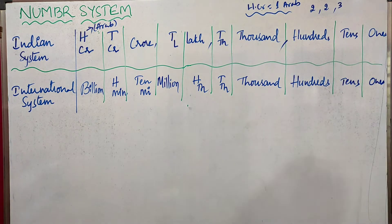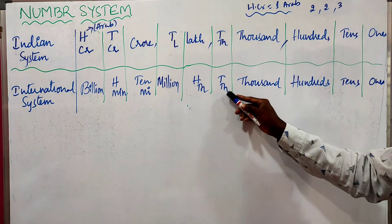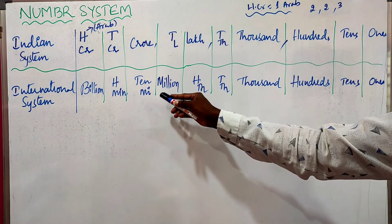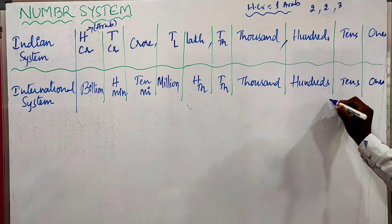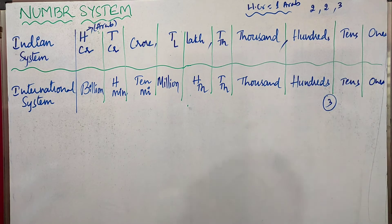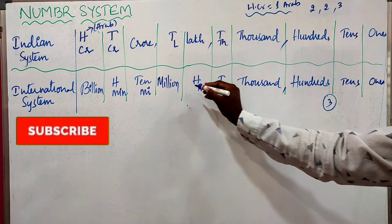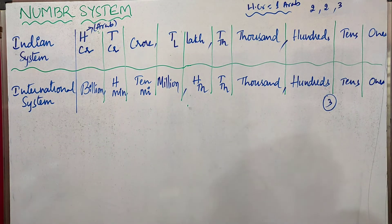Coming to the international system, place values are 1s, 10s, 100s, 1000s, 10,000, 100,000, millions, 10 millions, 100 millions, and billion. In the international system, we place the commas after every 3 digits — that means after 100s, then 100 thousands, then 100 millions, we place the commas.